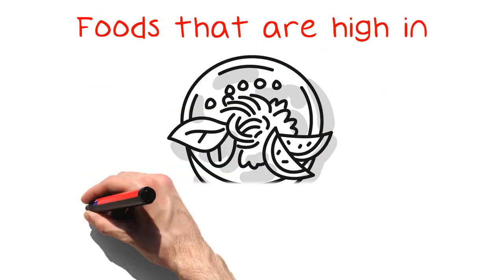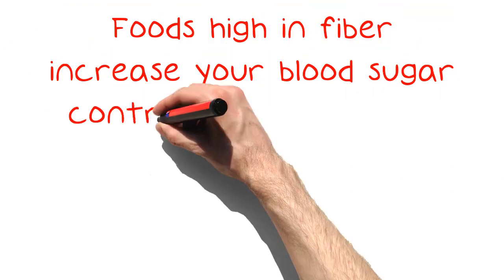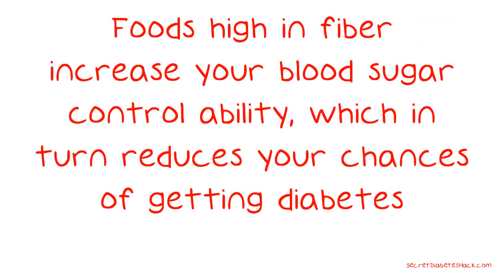Foods that are high in fiber include fruits, vegetables, beans, whole grains, and nuts. Foods high in fiber increase your blood sugar controllability, which in turn reduces your chances of getting diabetes.